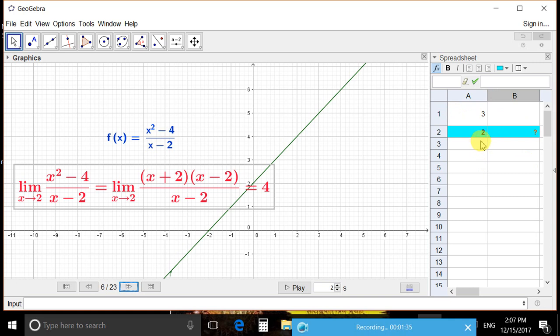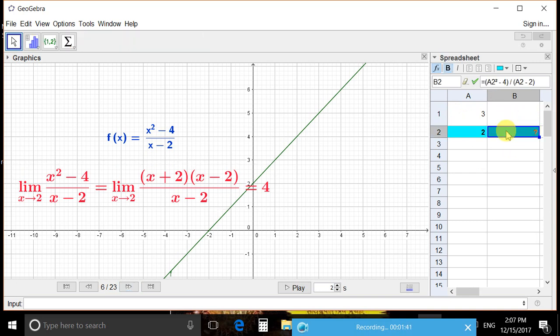Here, when x equals 2, the value in the B cell gives us f(x), which is written as (x² - 4)/(x - 2). Therefore, at x = 2, we get a question mark, which tells us it is not defined.